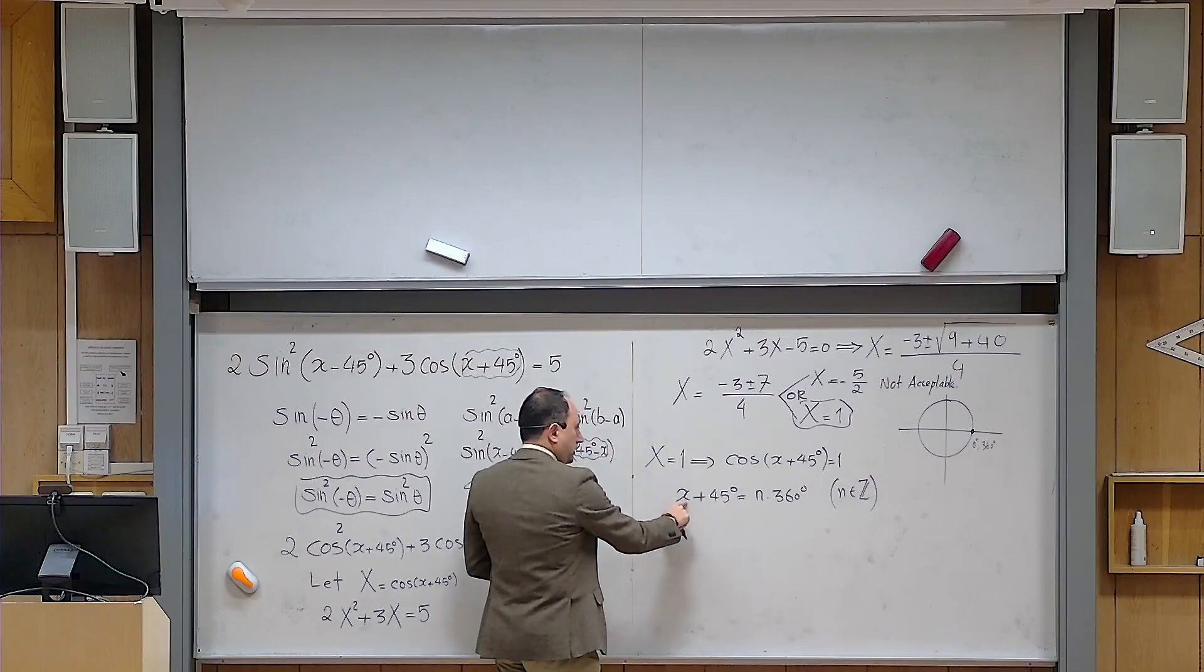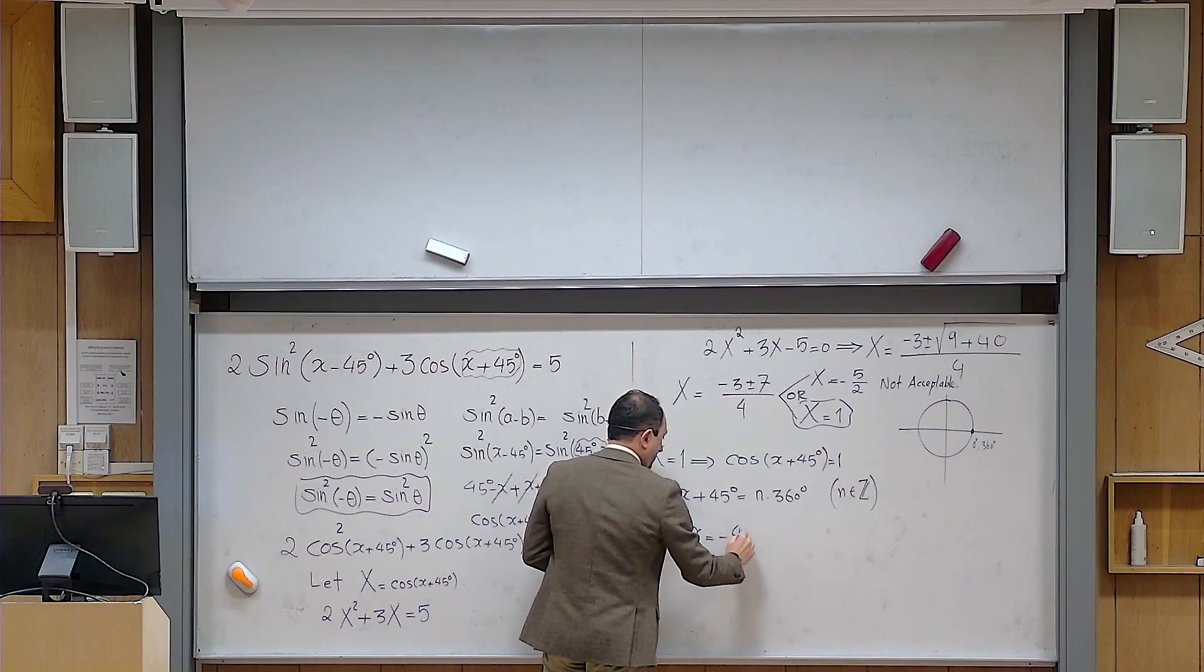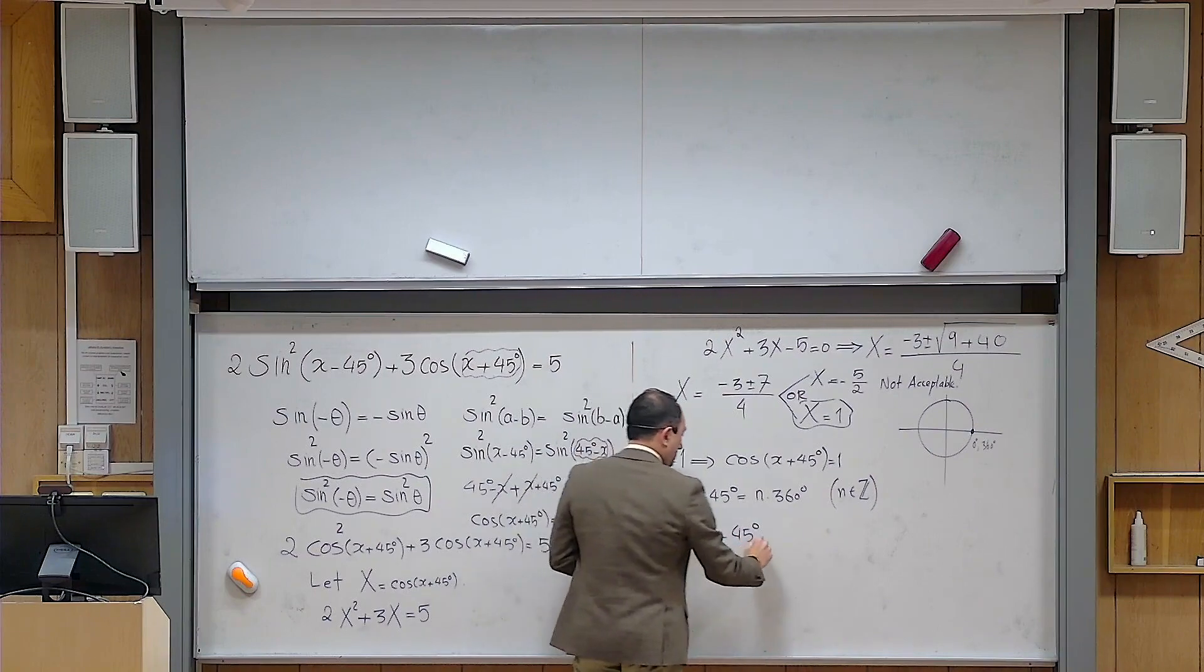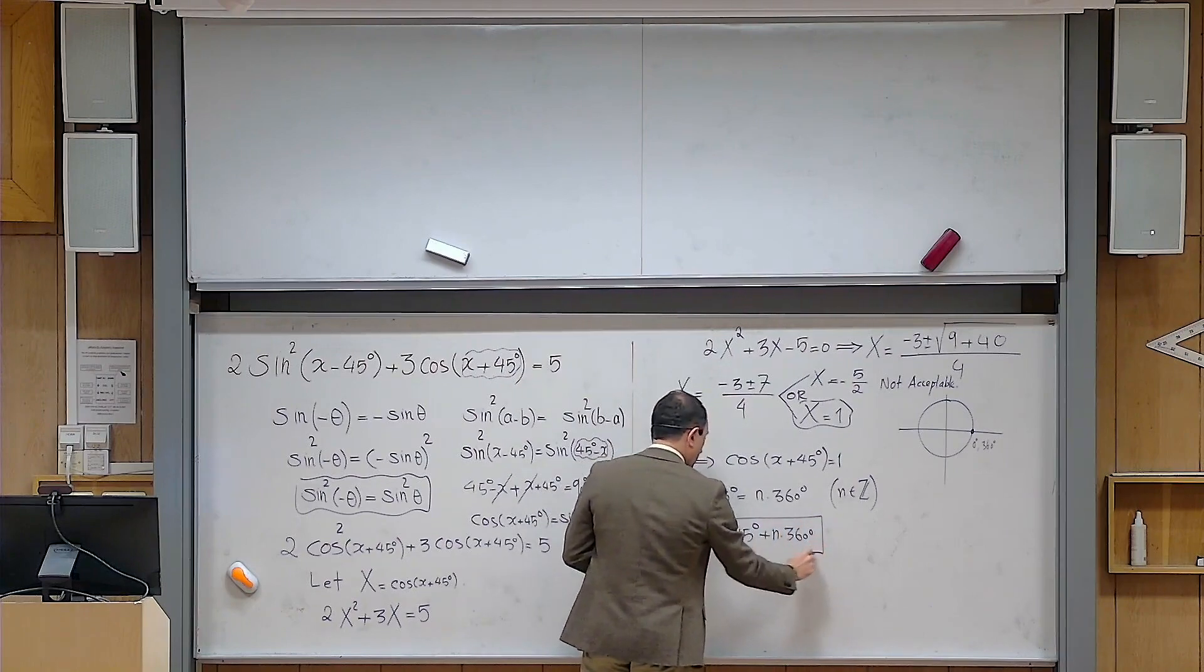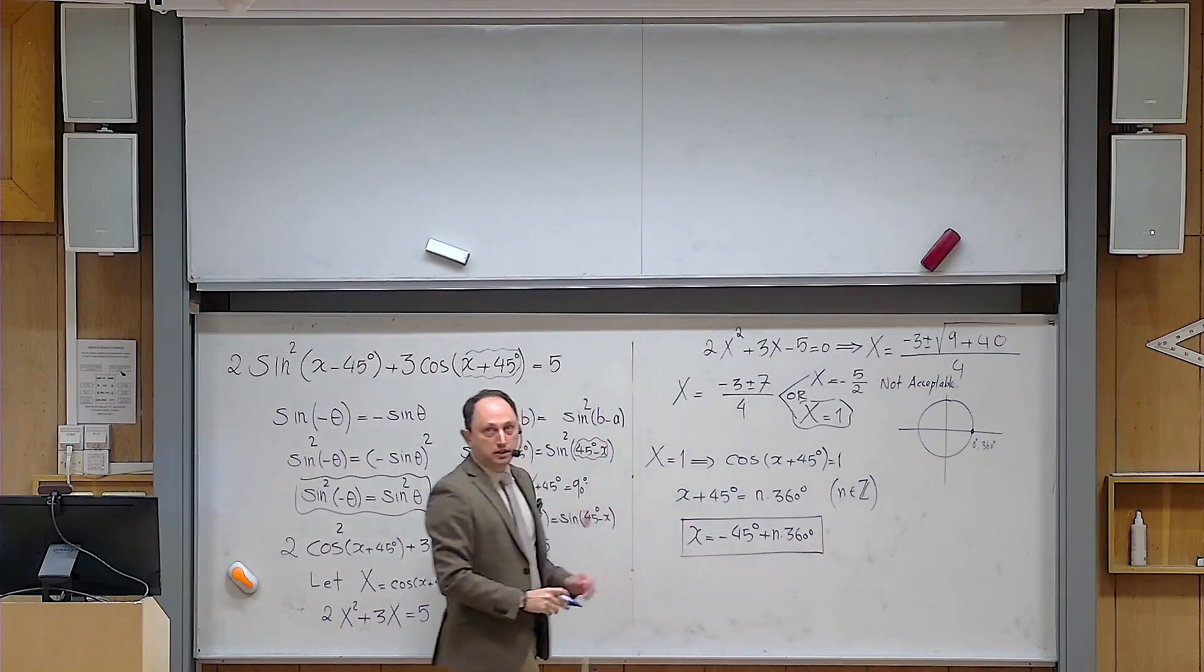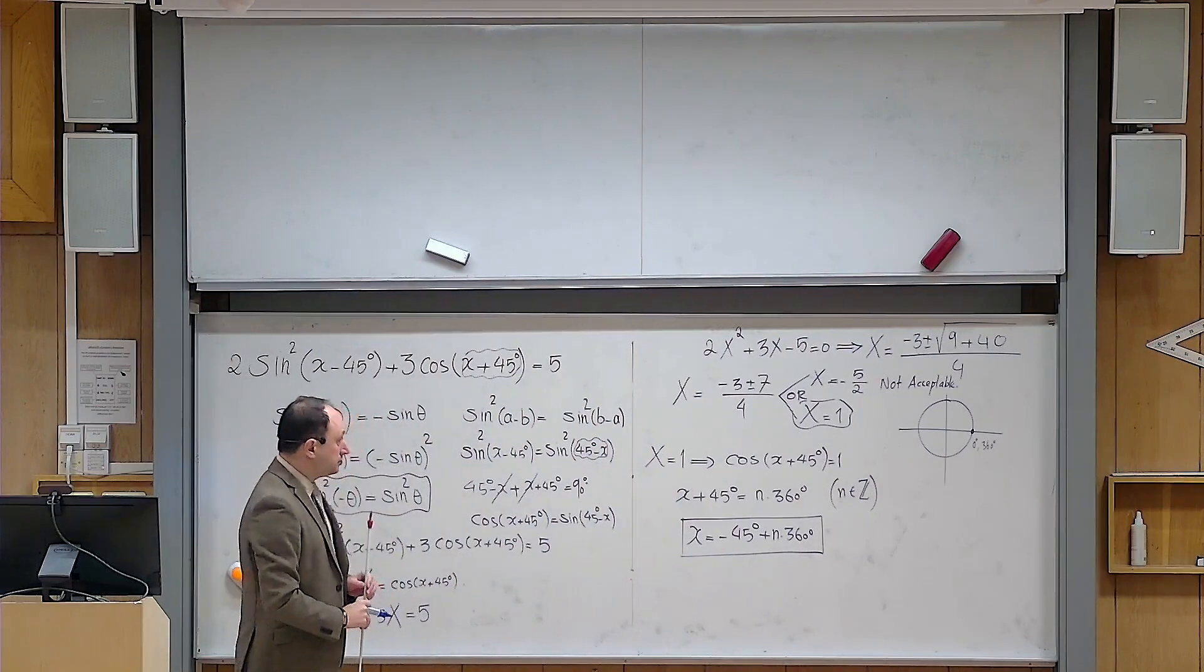And then I am looking for x. So what I do, I just simply move 45 to the other side. It becomes x equals minus 45 degrees plus n times 360 degrees. And that is exactly the answer which was provided by the problem.